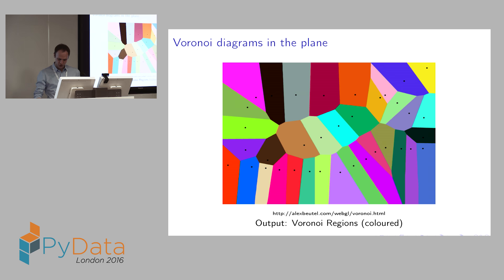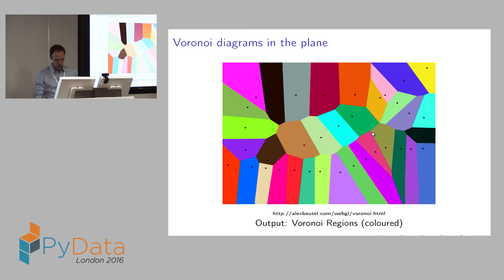If you'd like to play around with this yourself, I'd suggest you go to this website by Alex Beutel — it's a web applet where you can click in some points and get a Voronoi diagram. He has kindly allowed me to use his graphics in this talk. In general, the input into the Voronoi diagram is always a set of points, and the output is a set of regions surrounding these points representing closest distance.